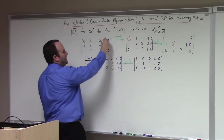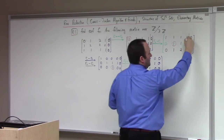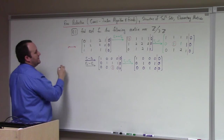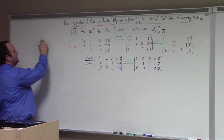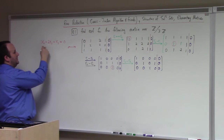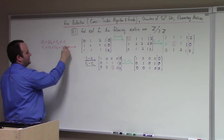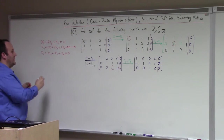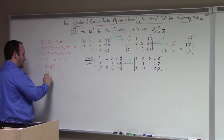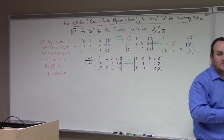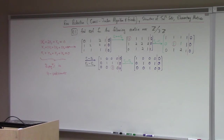If we think of this as the augmented coefficient matrix of a system, with the bar — Bill puts colons, but it's just decoration. This is equivalent to: x2 plus 2x3 plus x4 equals zero; x1 plus 2x2 plus 2x3 plus 2x4 equals zero; x1 plus x2 plus x3 plus x4 equals zero. Here we have three equations and four unknowns. Zero is always a solution of a homogeneous problem. This is a homogeneous problem.